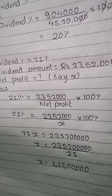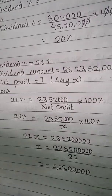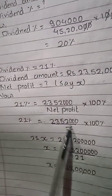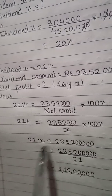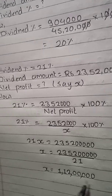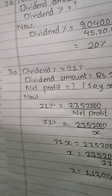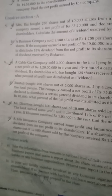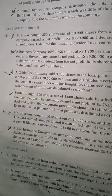Solution: Dividend percent is 21%. Dividend amount is Rs. 23 lakh 52,000. Let net profit = x. So 21/100 × x = 23,52,000. Cross multiplying: x = (23,52,000 × 100) / 21. Net profit x = Rs. 1,12,00,000. So the net profit of the publication house is Rs. 1 crore 12 lakhs.